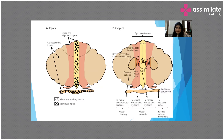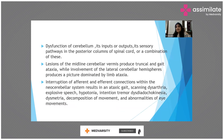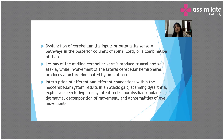Dysfunction of the cerebellum — any of its inputs, any of its outputs, or the sensory pathway in the posterior column of the spinal cord relating to gait, locomotion, and posture — or a combination of these are the causes behind ataxia. A lesion in the midline cerebellum, the vermis, produces truncal ataxia — coordination problems in the trunk and spine. Involvement of the lateral cerebellar hemisphere produces a picture dominated by limb ataxia.